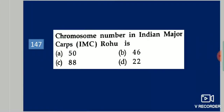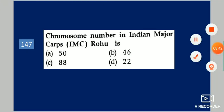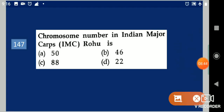Next question: Chromosome number in Indian major carp IMC Rohu is dash. Your options are: 50, 46, 88, 22. Your answer is 50.